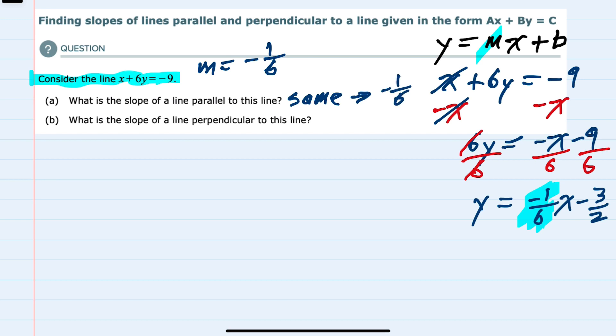And the second question, what is the slope of the line perpendicular to this line? Perpendicular would be the inverse reciprocal of that slope. And to find the inverse reciprocal of a fraction, we take that fraction and flip the numerator and the denominator and change the sign.